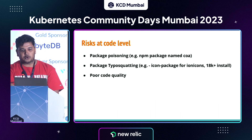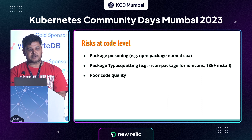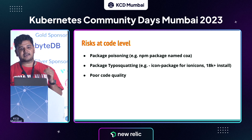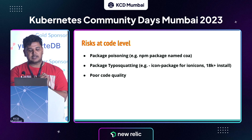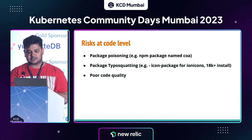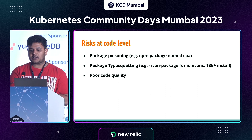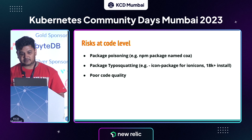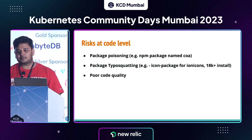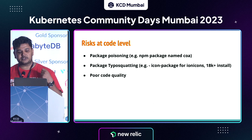At the code level, one very common risk is package poisoning. Attackers introduce malicious code into some well-known packages, and if developers are not careful they end up importing those packages. An example is the NPM package called Koa, a very popular package downloaded more than a million times every week. There had been no development for about three years, but then new versions started appearing that were later identified as containing malicious code capable of stealing passwords.